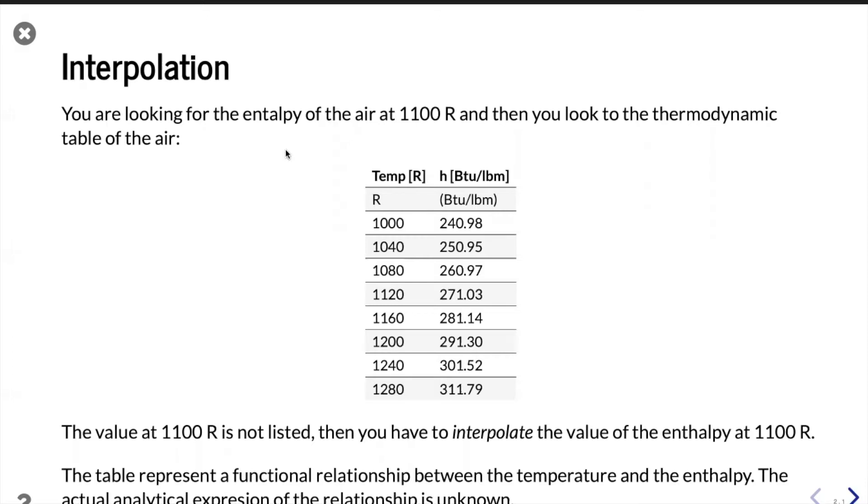We are looking for the enthalpy of the air at 1100 Rankine and we go to the book and we found the table for the air. One column is the temperature in Rankine and the other one is the enthalpy in BTU per pound mass. The value that we want to find is the enthalpy for 1100, but when we look into the table there is no value for 1100.